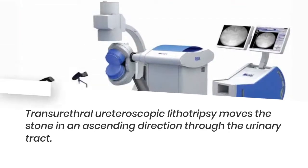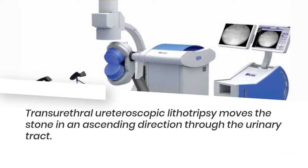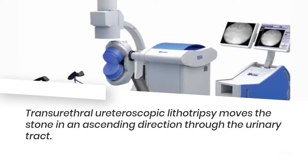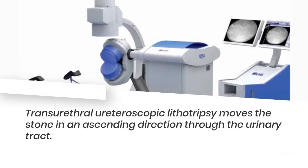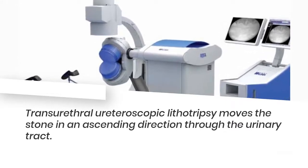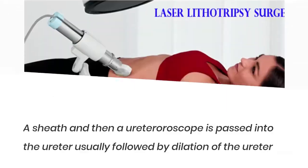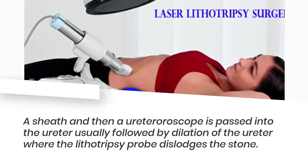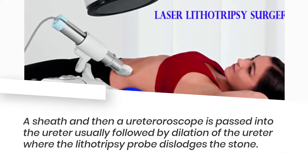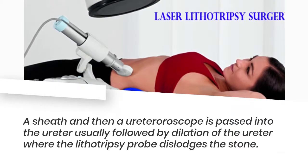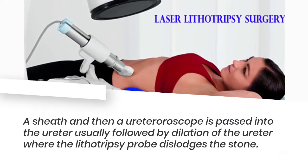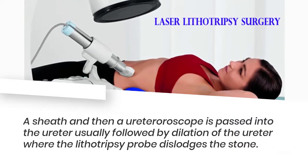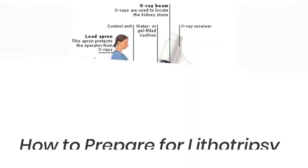Transurethral lithotripsy: Transurethral ureteroscopic lithotripsy moves the stone in an ascending direction through the urinary tract. A sheath and then a ureteroscope is passed into the ureter, usually followed by dilation of the ureter, where the lithotripsy probe dislodges the stone.